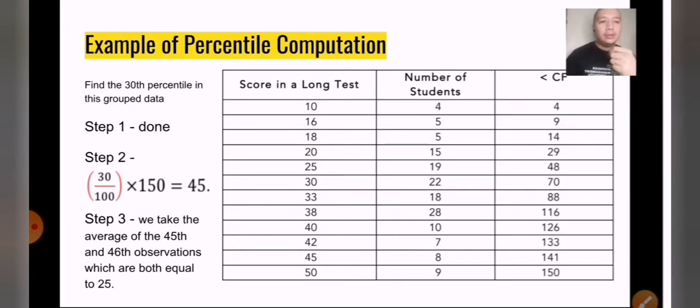I have a table. In this given, the table is already in an ascending order or it's presented in an ascending order. On the first column, you have the scores in a long test one, out of 50 items. On the second column, you have the number of students, meaning how many people have had this score. And then finally, on the last column, you have the less than cumulative frequency.